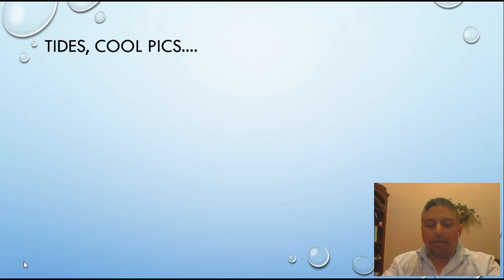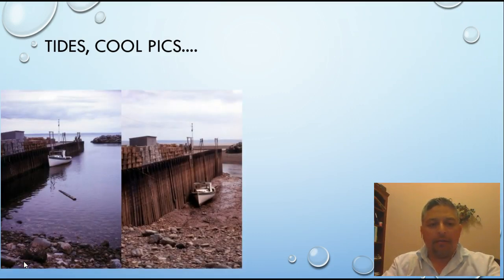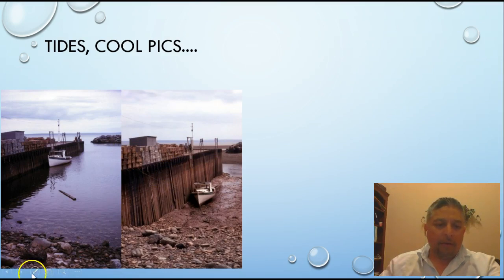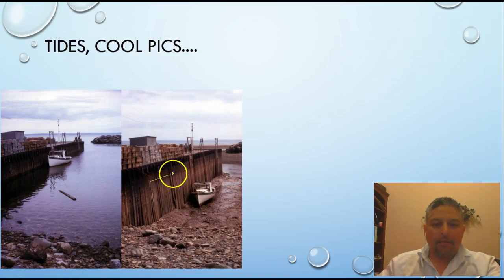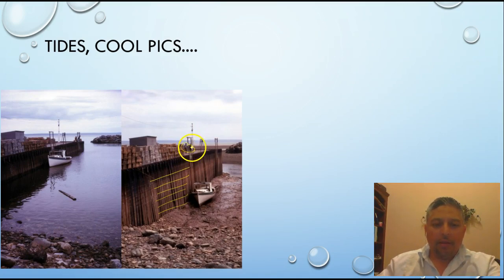First we're gonna be looking at a couple of nice pictures. This one is in Canada. You can see the difference between the low tide and the high tide. Notice that it's about 8 to 9 meters difference between the high tides and low tides. You can see the people over here so you can see the scale — it's probably about one and a half to two meters in height.